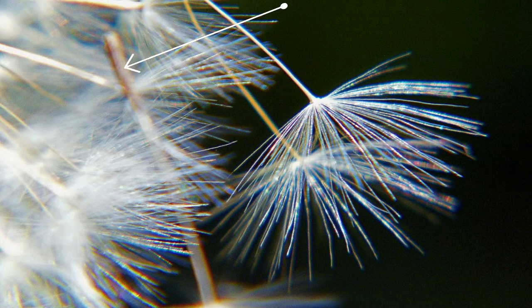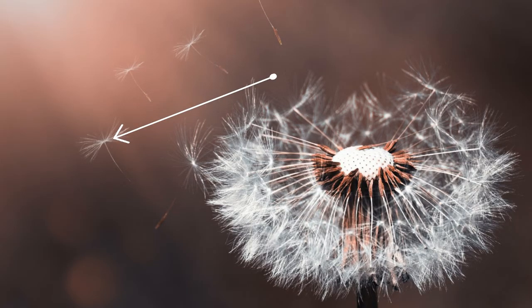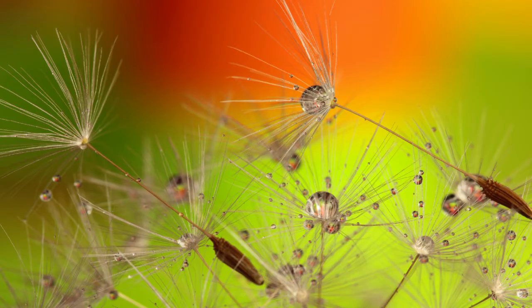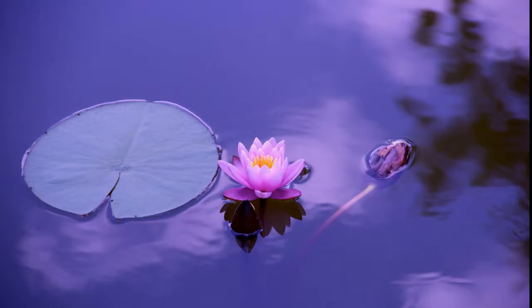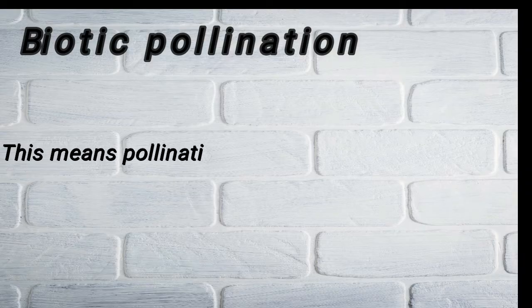Look at this picture — where the arrow points is the seed and the rest of the part is floating in the wind. That is wind pollination. This one too. Now there's a different one. As you can see, this is a lotus and the pollination that occurs here is the water one — water pollination.